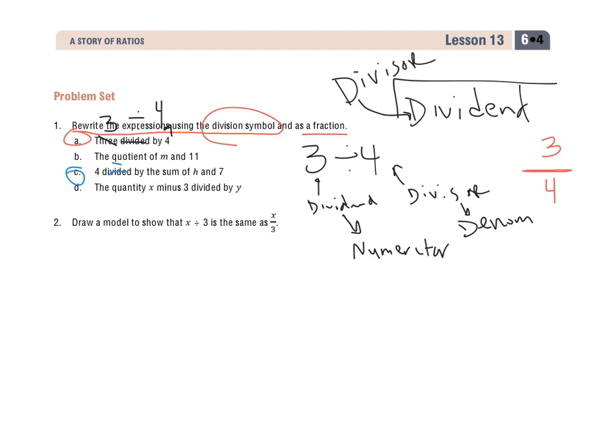So I know that it's going to be, and I'll do it right up here towards the top, 4 divided by the sum of H and 7. So I know it's H plus 7, but here's where there's an interesting piece. When it tells me the sum of, it's telling me that I have to do H plus 7 first.